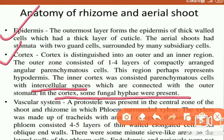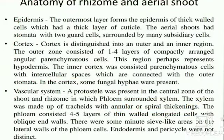Next is the vascular system. The vascular bundle in Rhynia is very different from other vascular systems, with phloem surrounded by xylem — a protostele arrangement. Xylem was made up of tracheids with annular and spiral thickening.